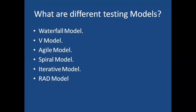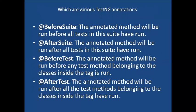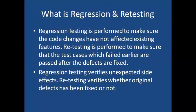What are the different testing models? Waterfall model, agile model, V model, spiral model, and iterative model. What is the difference between regression and retesting? Regression testing ensures code changes have not affected existing features and that no unexpected side effects have occurred. Retesting is done to confirm that the original defects have been fixed.